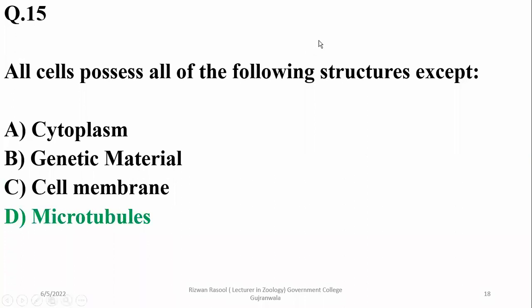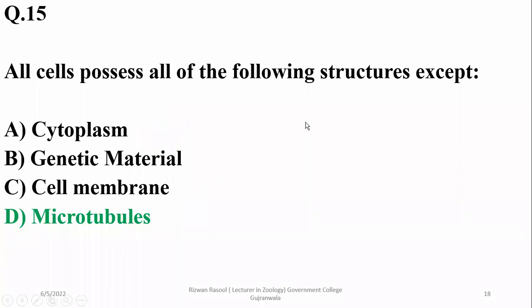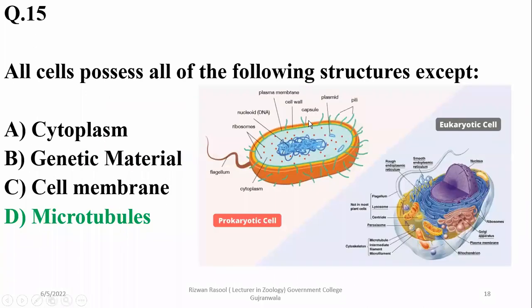Question 15: All cells possess all of the following structures except — microtubules cannot be the answer because they are not present in all cells; prokaryotes and eukaryotes differ here. Cytoplasm, genetic material, and cell membrane are vital components present in all cells. Right option is D (microtubules).